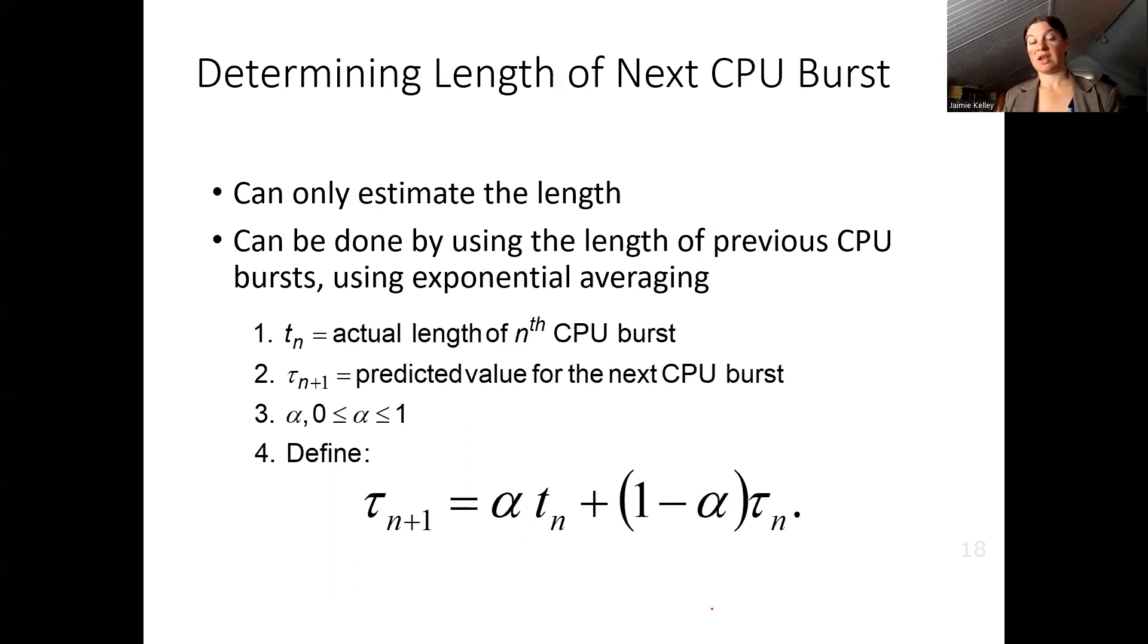The way we're going to do that is using exponential averaging. We're going to calculate the estimate for the next CPU burst by adding together some percentage of the most recent actual CPU burst and then some percentage of our most recent guess.